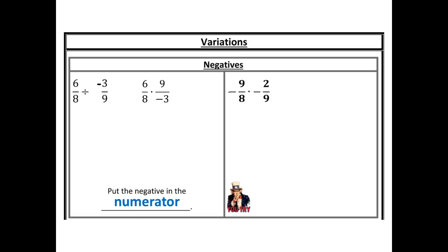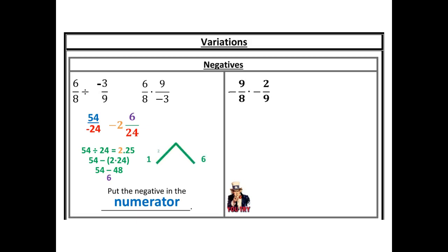I'm going to keep it, change it, flip it: six eighths stays the same, division changes to multiplication, then I flip negative three over nine to nine over negative three. That negative follows wherever the numerator goes, even if we have to flip. Now we just multiply: six times nine gives me 54, eight times negative three gives me negative 24. I just need to simplify. I'm going to find my mixed number — take the division, get a whole number, take that whole number times my denominator and subtract from my numerator. My new numerator is six, giving me negative two and six twenty-fourths. Turning it into a mixed number doesn't always mean it's fully simplified, so I look at six and 24 — the greatest common factor is six. Dividing both top and bottom by six, I get negative two and one-fourth.